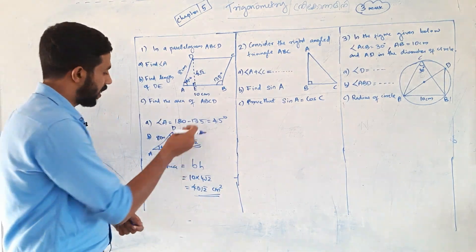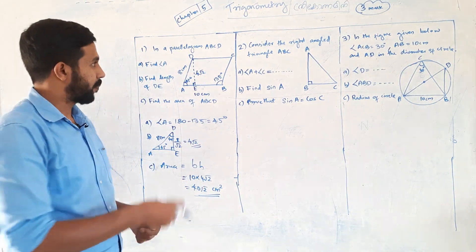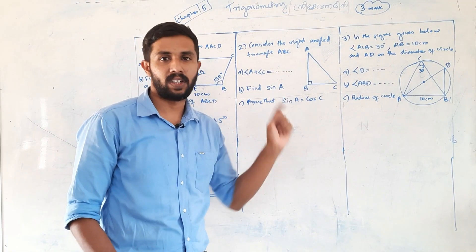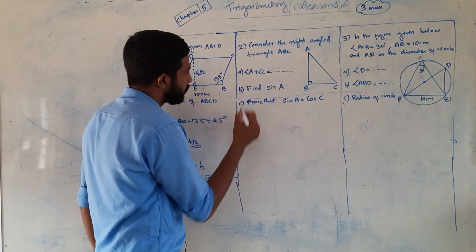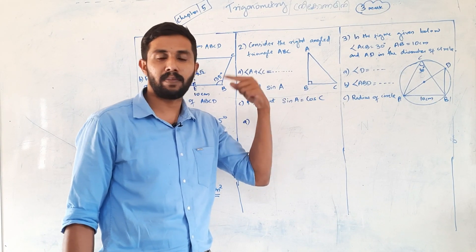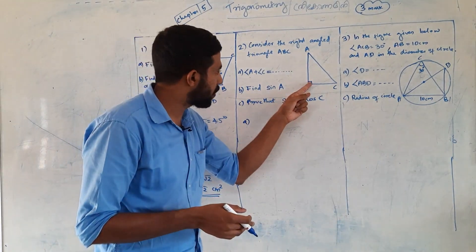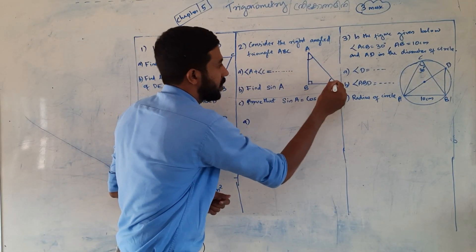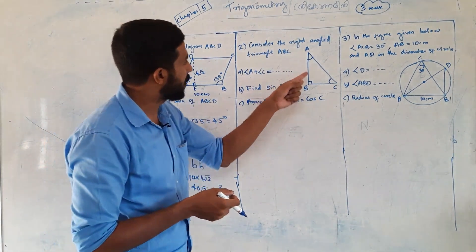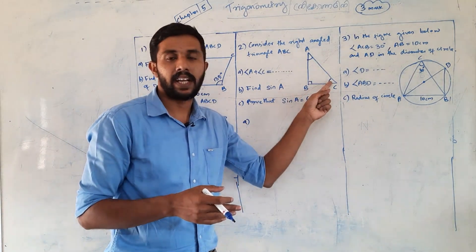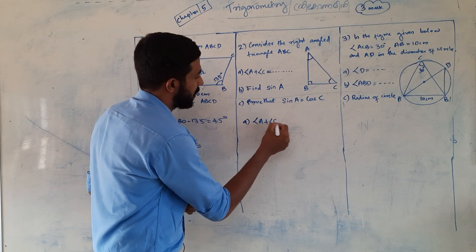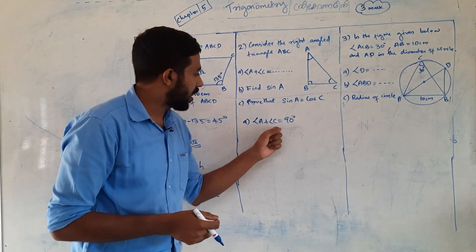We will now look at the right angle triangle ABC — angle A, B, C. We will find angle A plus angle C. Angle B is 90 degrees. Every angle B is 90 degrees. So the sum of angles is 180 degrees, one angle is 90 degrees, and the two remaining angles — angle A plus angle C — are the same.